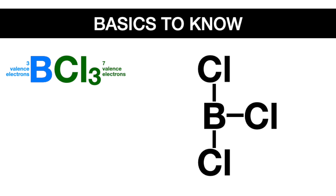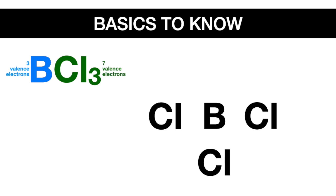The orientation of the molecule doesn't really matter. If you had put boron's single electrons in different locations, you would have put chlorine in different locations, but ultimately giving you the same Lewis dot structure and the same molecular bond structure.